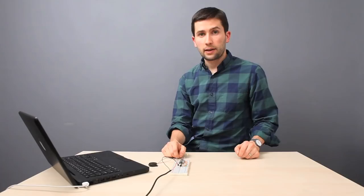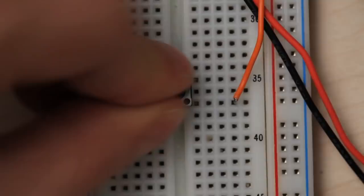I'm also going to hook up a button so that we're ignoring any input from the sensor until we're ready. Let's take a quick look at our code. When we first start the Arduino, it'll be in standby mode. In this mode, it'll ignore input from the sensor and won't trigger the flash.